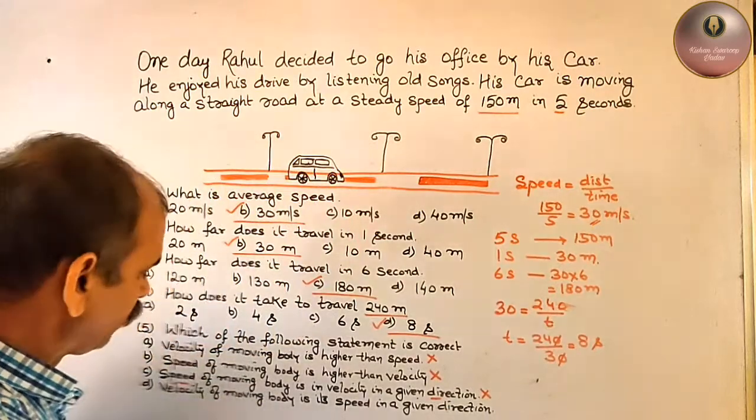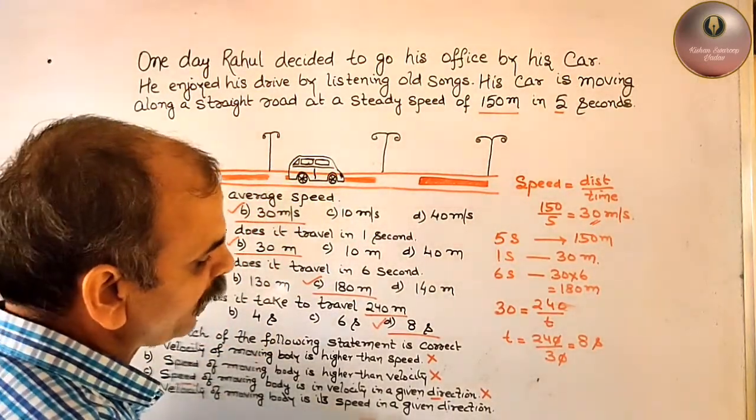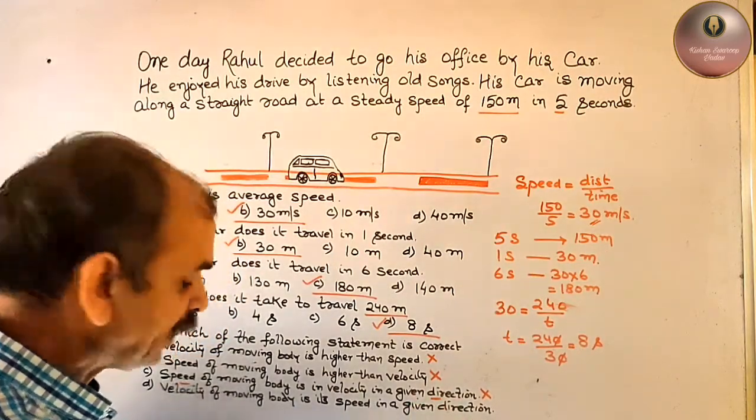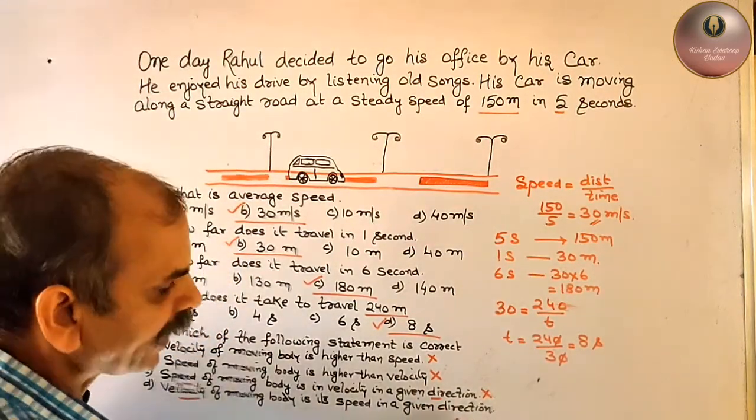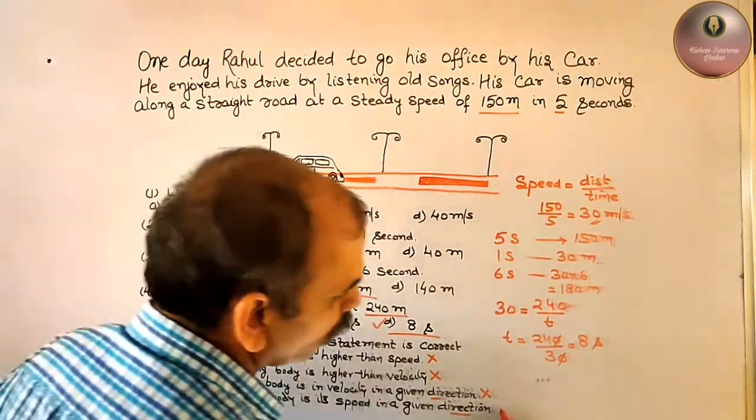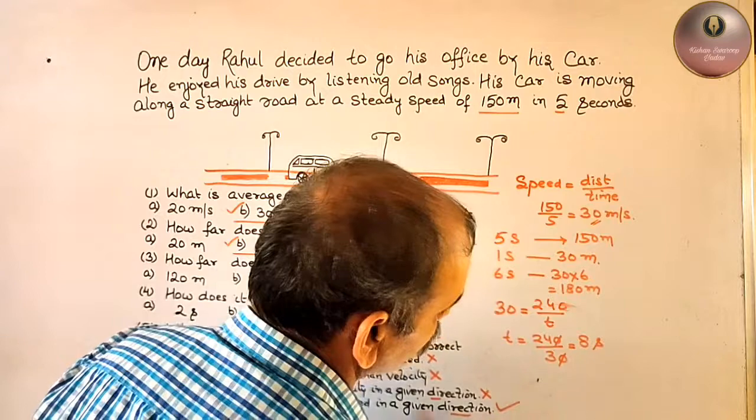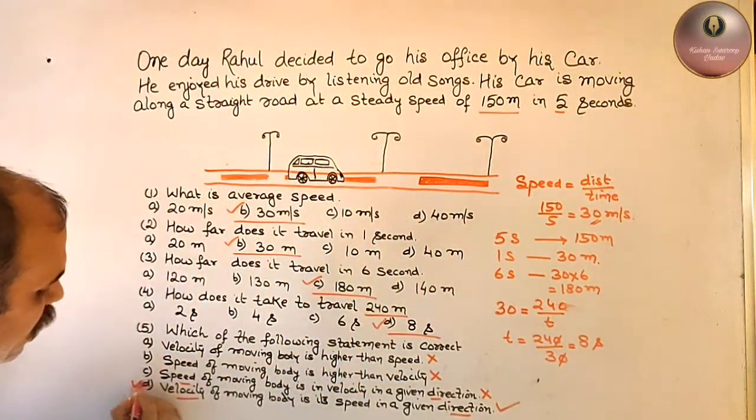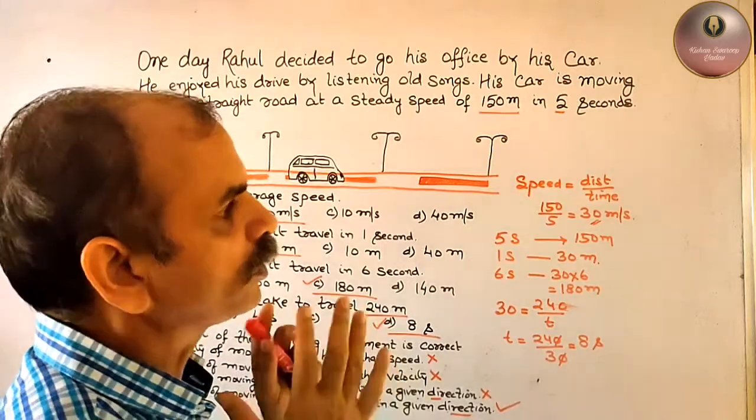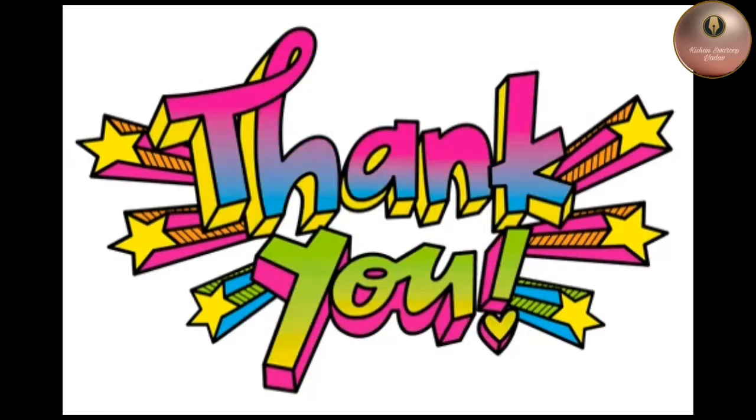Next, velocity of the moving body is its speed in a given direction. Velocity contains the direction. Now it is correct. D option is your correct option. So we can say this is your correct option.